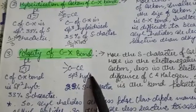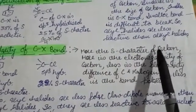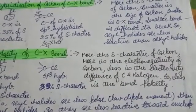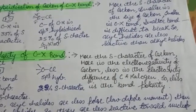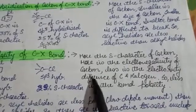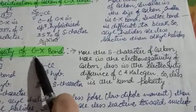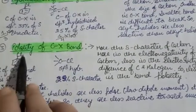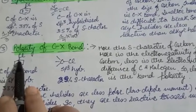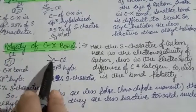In SP3, the percentage S character is 25%. And we know that the more S character, the smaller the size of carbon will be. And the more the size is smaller, the more electronegativity will be greater. If the electronegativity is greater, the more polar the carbon-halogen bond will be.